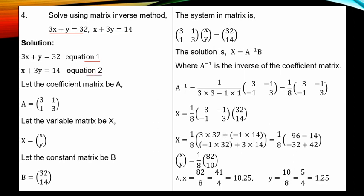We define three matrices. The coefficient matrix A: the S column is 3, 1 and the Y column is 1, 3. The variable matrix is S and Y. The constant matrix is 32, 14. We put the system in matrix form. In the inverse method, you get the inverse of the coefficient matrix to find the variable matrix S.